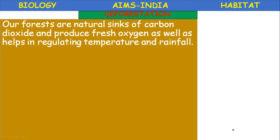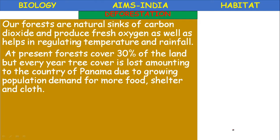Deforestation: forests are the natural sinks of carbon dioxide and produce fresh oxygen, as well as help in regulating temperature and rainfall. In a certain region, we can determine the rainfall by counting the number of forests. The more forests there are, the more rainfall there is, and the more fresh oxygen is available.